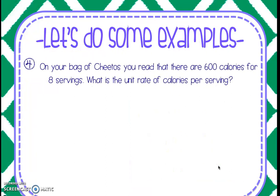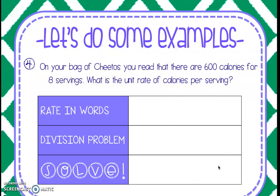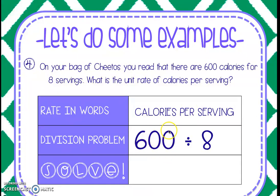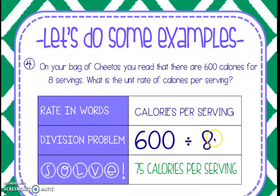One more example. On your bag of Cheetos, you read that there are 600 calories for eight servings. What's the unit rate of calories per serving? Our rate in words: calories per serving. Going back into the problem — there are 600 calories, 'per' tells us to divide, by eight servings. Our division problem is 600 calories divided by 8 servings. When we plug this into our calculator, we find there are 75 calories per one serving of Cheetos.